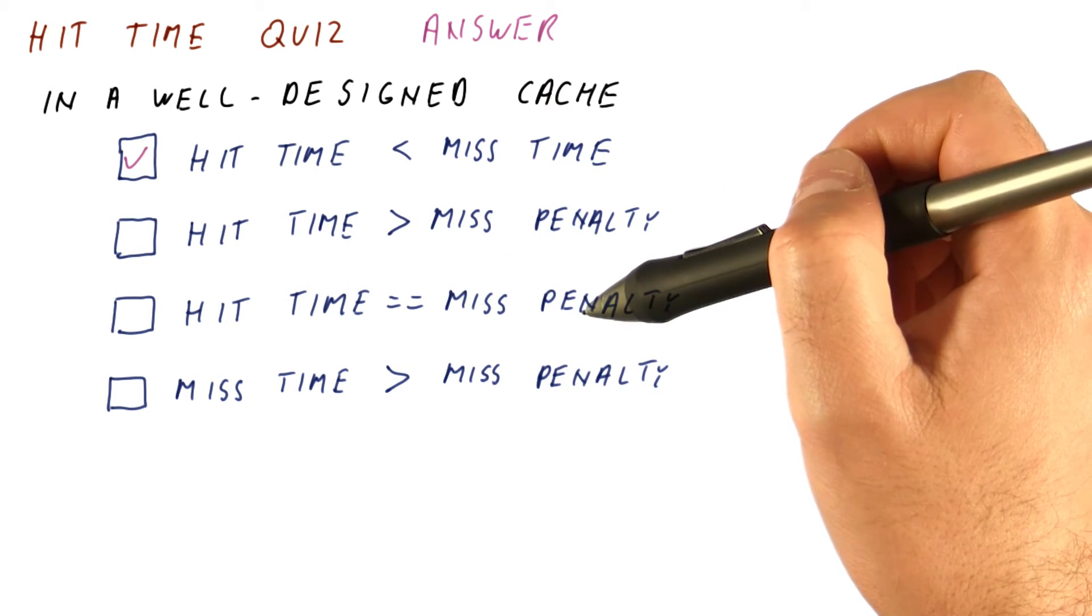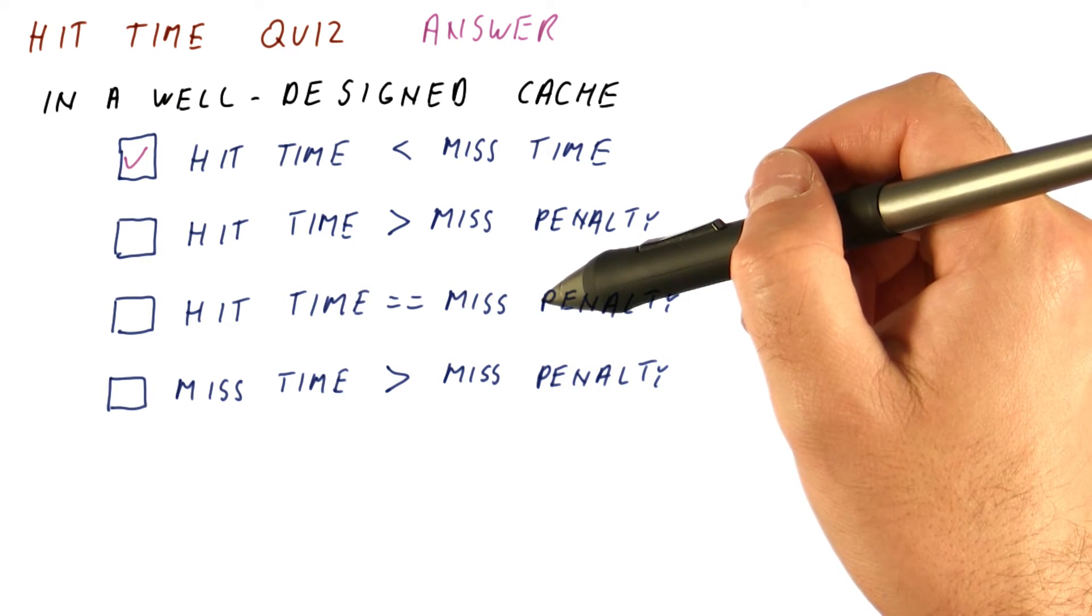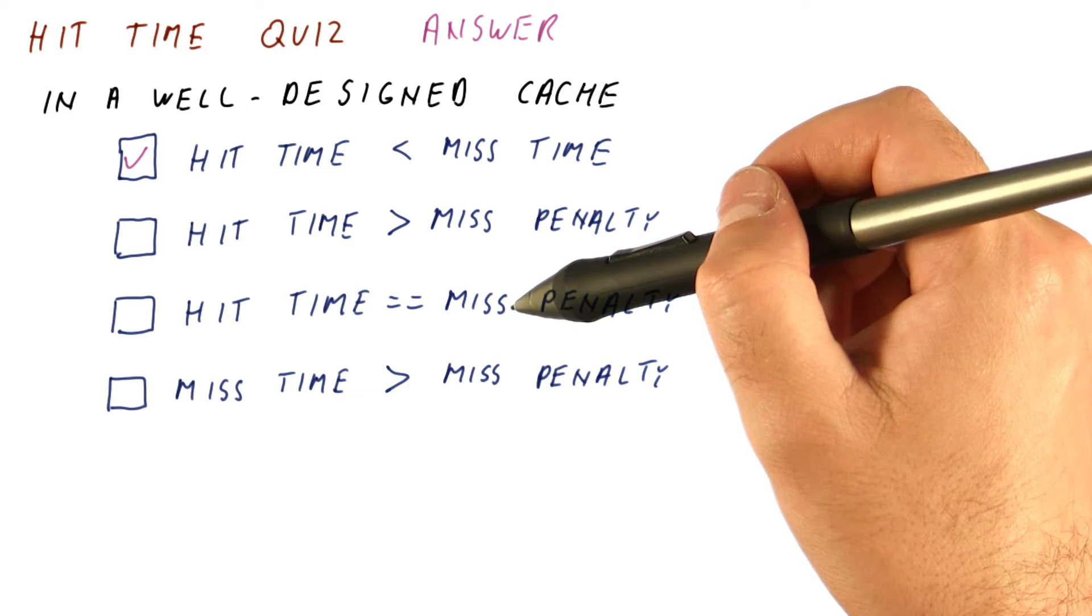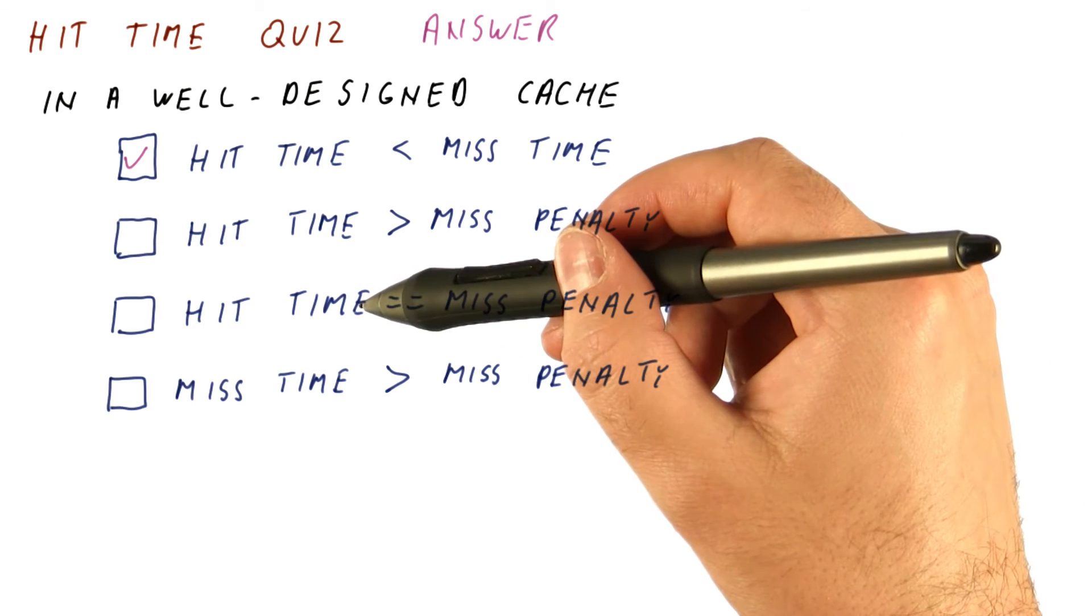Hit time equals the miss penalty. No, we want the hit time to be significantly less than the miss penalty. If it is equal to the miss penalty, we might just as well go to memory every time, because that's what the miss penalty is about. So we should not select this.